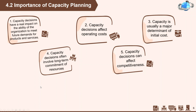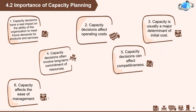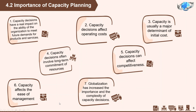Fifth, capacity decisions can affect competitiveness. If a firm has excess capacity or can quickly add capacity, that fact may serve as a barrier to entry by other firms. Capacity can also affect delivery speed, which can be a competitive advantage. Next, capacity affects the ease of management — having appropriate capacity makes management easier than when capacity is mismatched. That's why our main goal in doing capacity planning is to meet the demand.